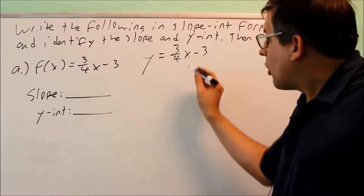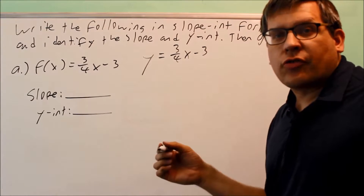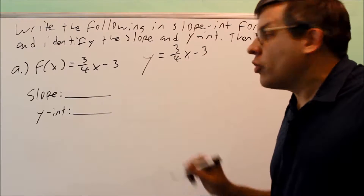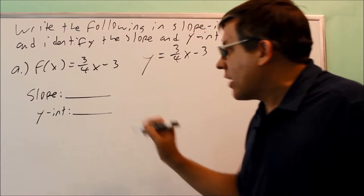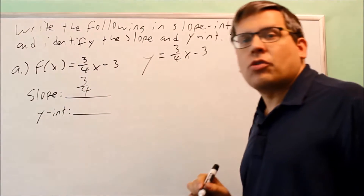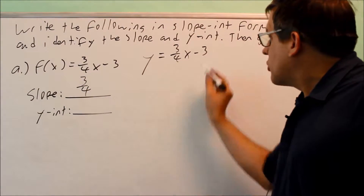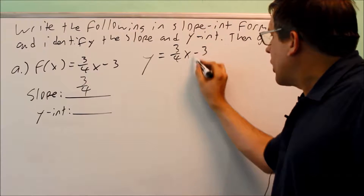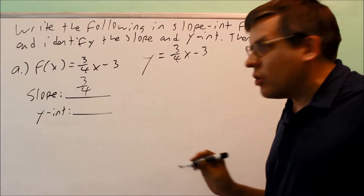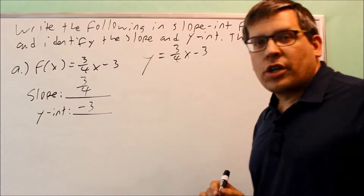The slope is always the number that comes in front of the x. When you write your answer for slope, you're not going to include the x — you're only going to include the number in front of it. The slope is just a number only; it's three-fourths. The y-intercept is always the number that comes after the x, and you want to use the same sign that's with it, so this is going to be negative three.